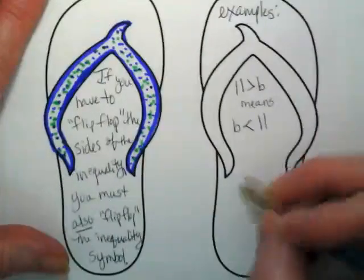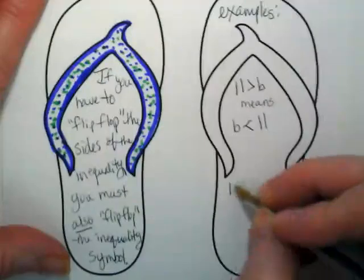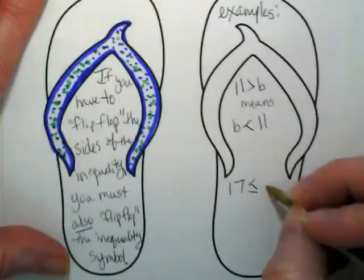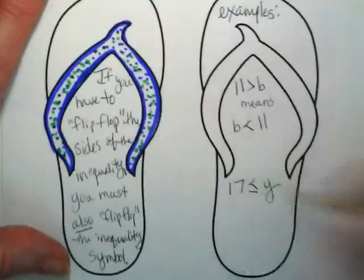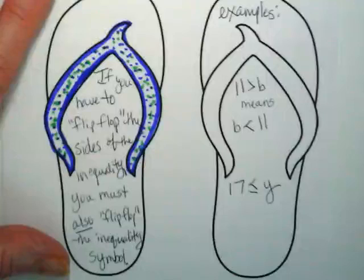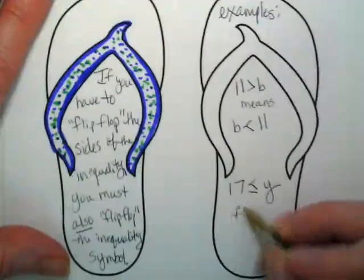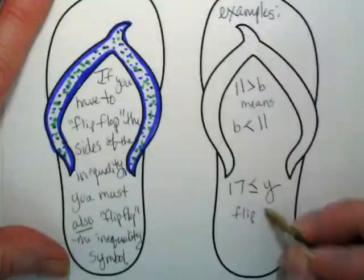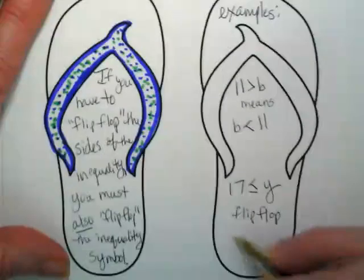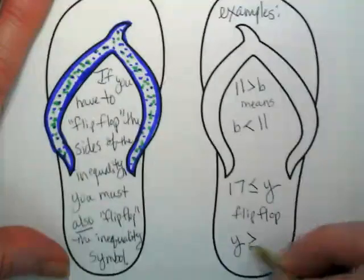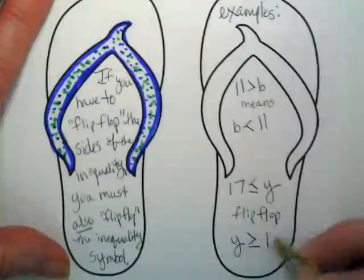Our second example: if I have 17 is greater than or equal to Y, then I flip-flop to show that Y is less than or equal to 17.